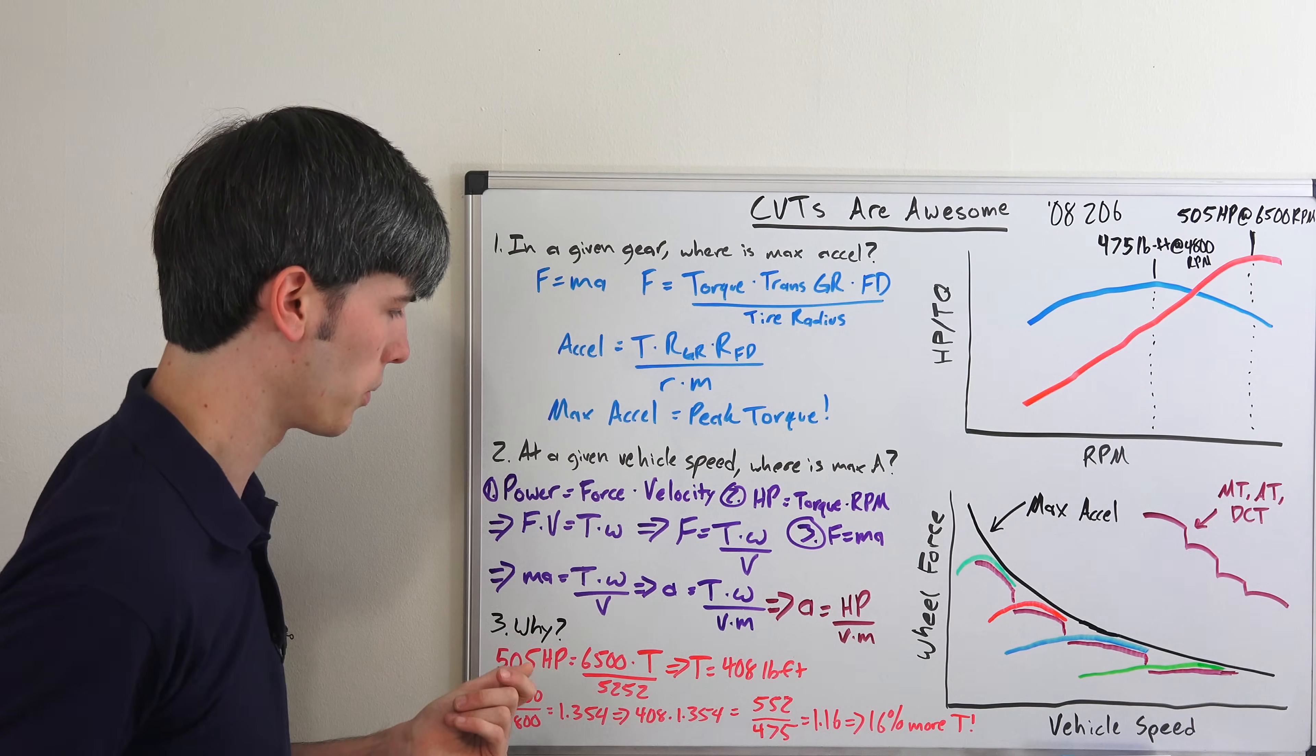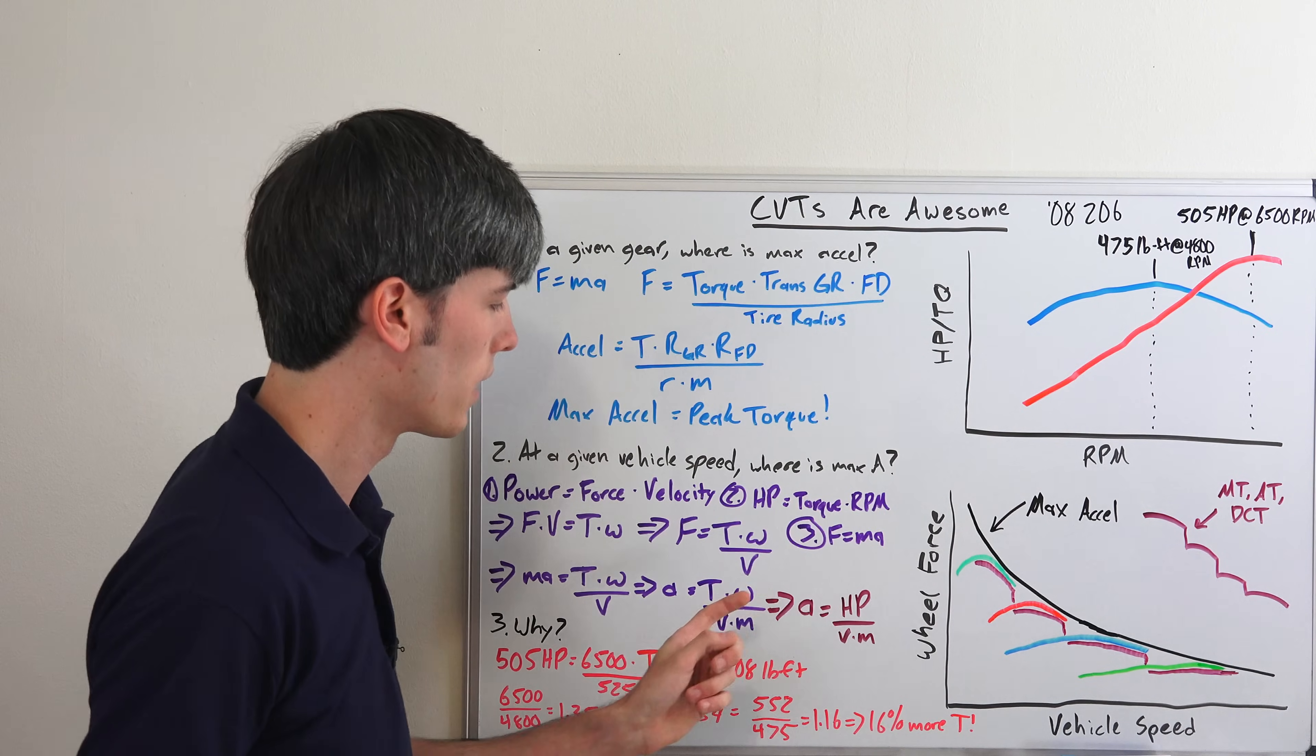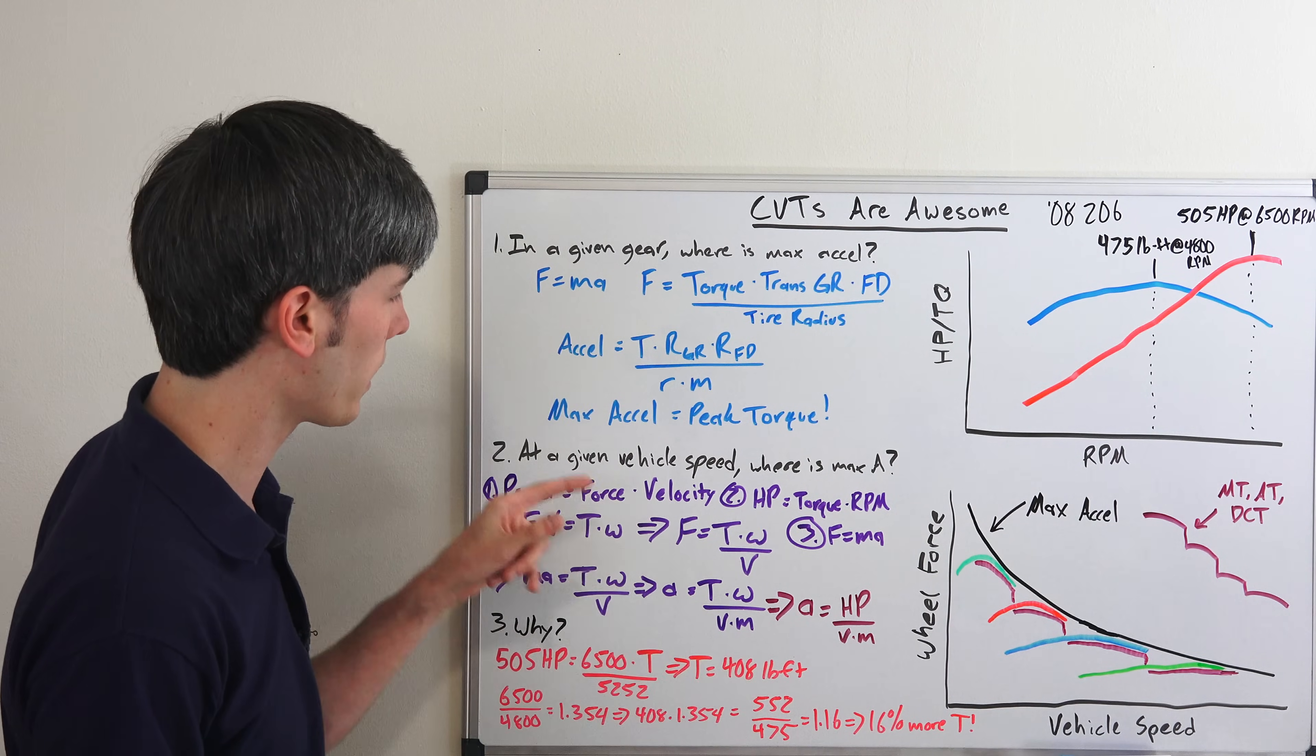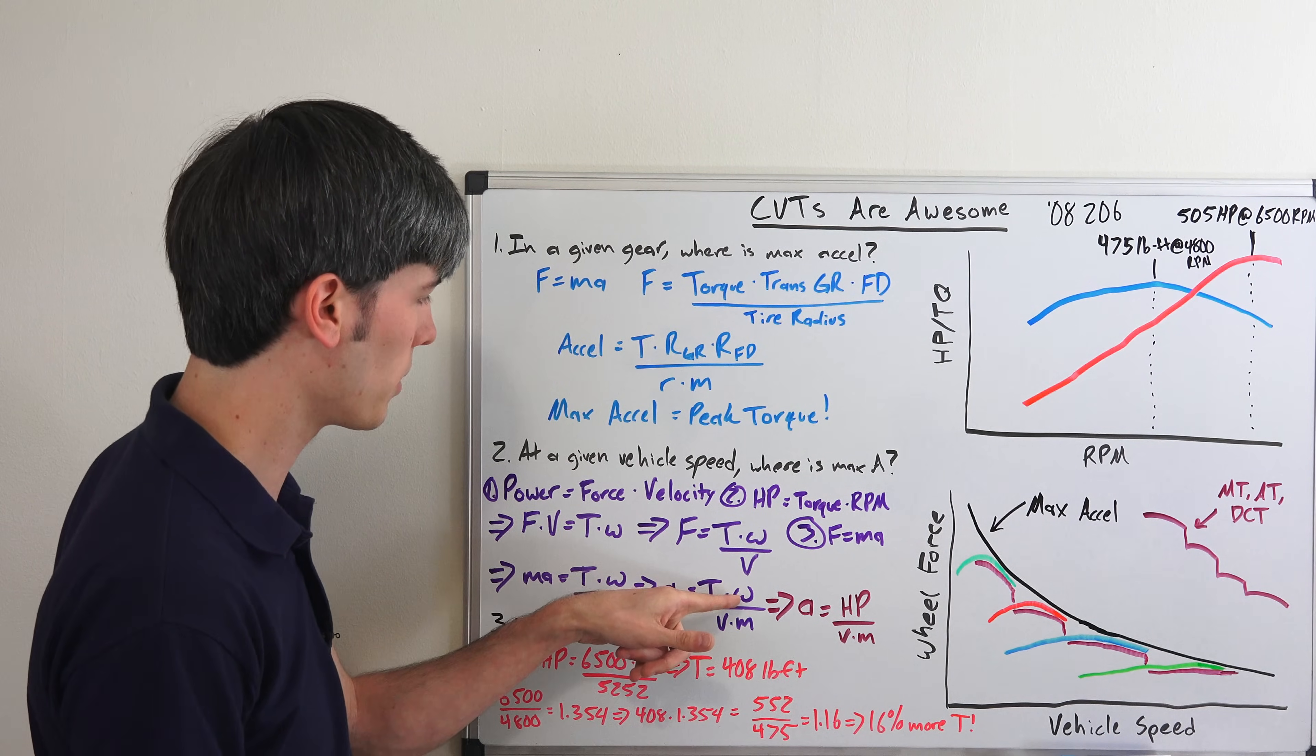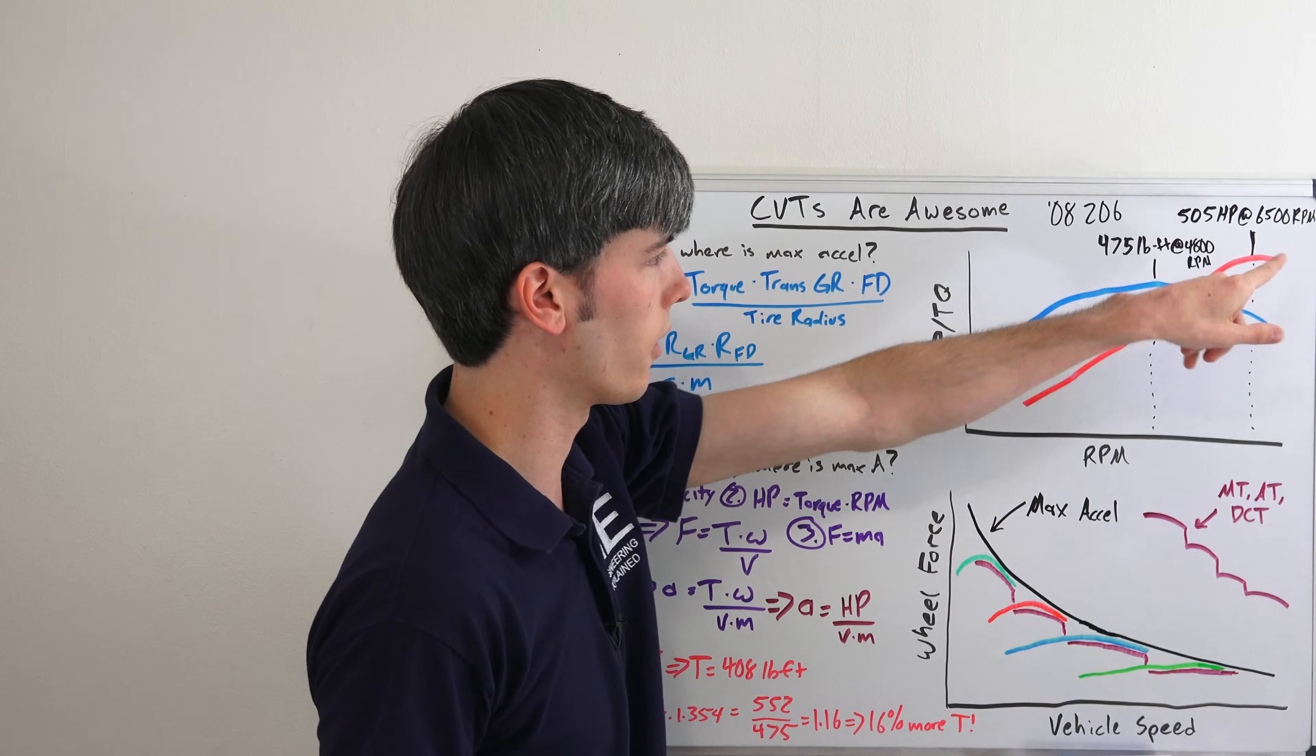We can set these two equal to each other and now we have an equation with acceleration in it. So we can find out what max acceleration is. That gives us acceleration equal to torque times your engine speed divided by velocity times the mass. We're at a given speed, so V is going to be constant, M is going to be constant - the mass of the vehicle. T times ω of course is equal to horsepower, so our maximum acceleration is going to occur at maximum horsepower.